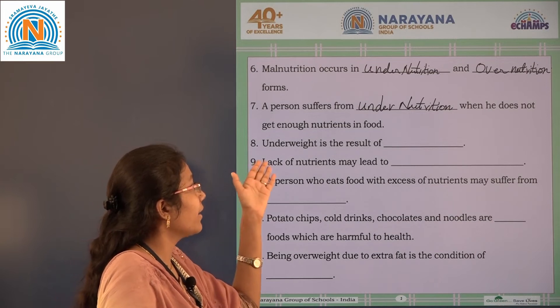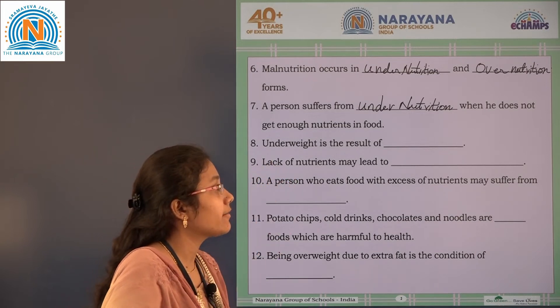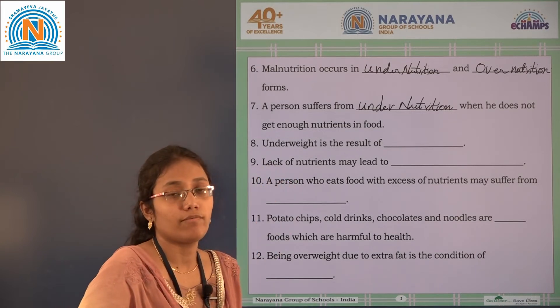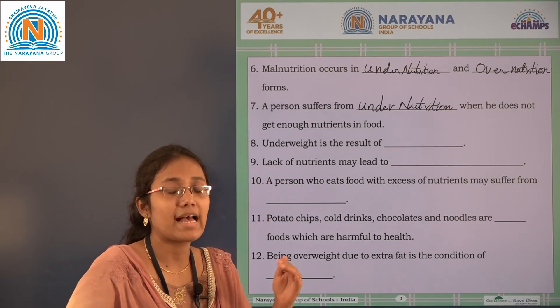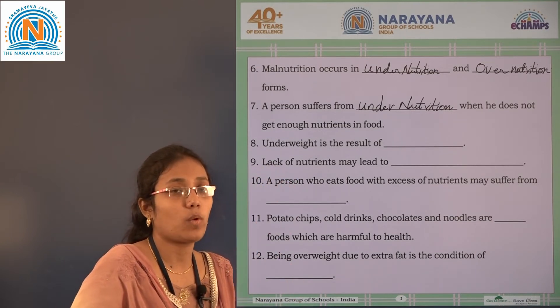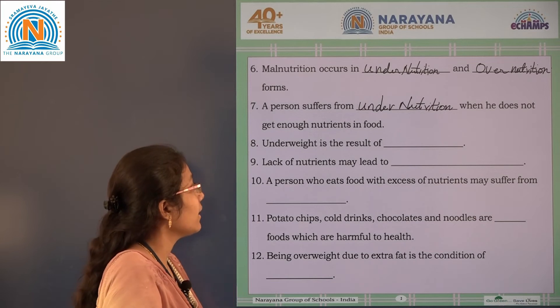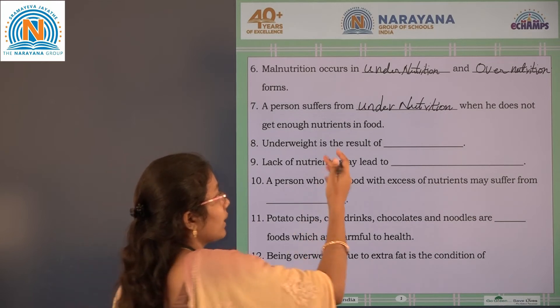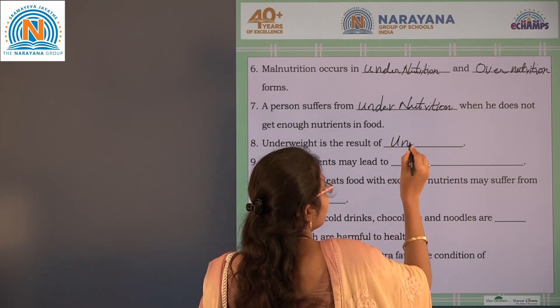Next, the eighth blank: underweight is a result of undernutrition — if a person has less weight, he is suffering from undernutrition.